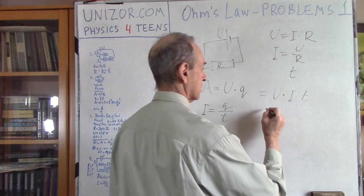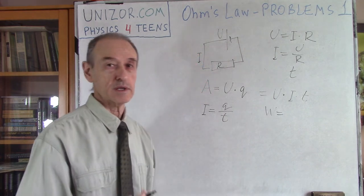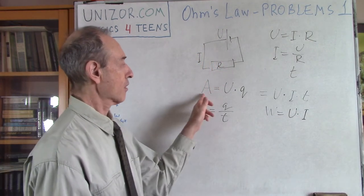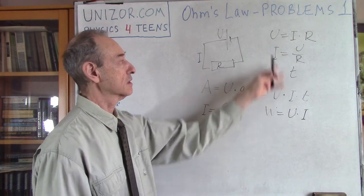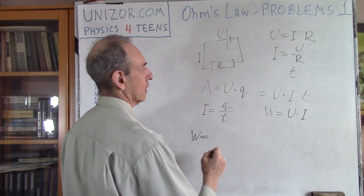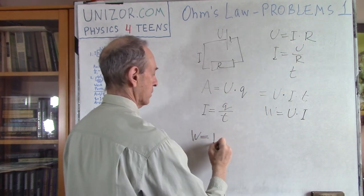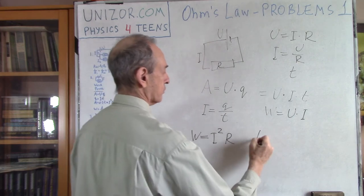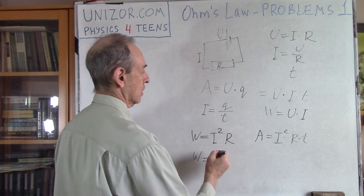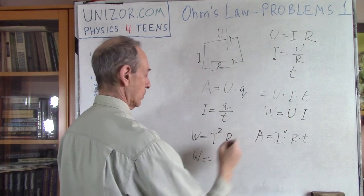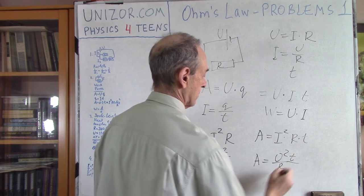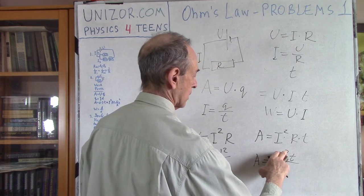So work done by the battery during time T is W = U·I·T — voltage times current times time. From this, power P = W/T = U·I, which is the amount of work per unit of time. We can express this differently using Ohm's law: substituting U = I·R gives P = I²·R, and W = I²·R·T. Or substituting I = U/R gives P = U²/R, and W = U²·T/R. These are different formulas for the same quantity.